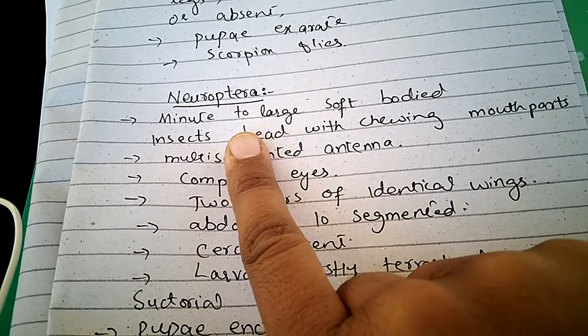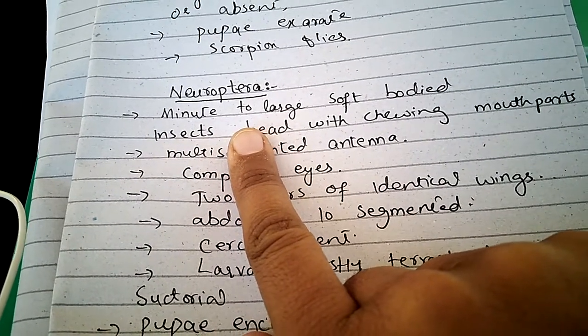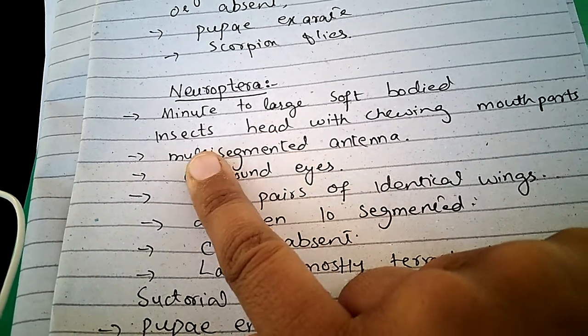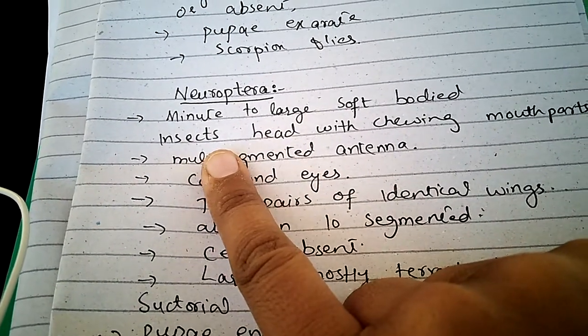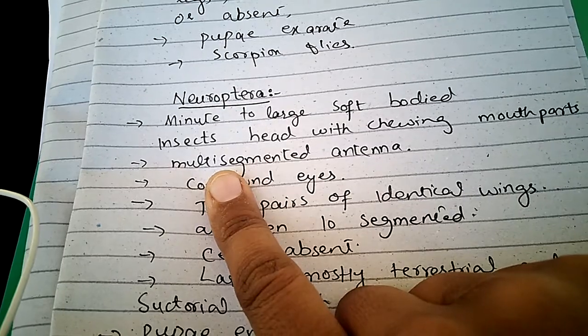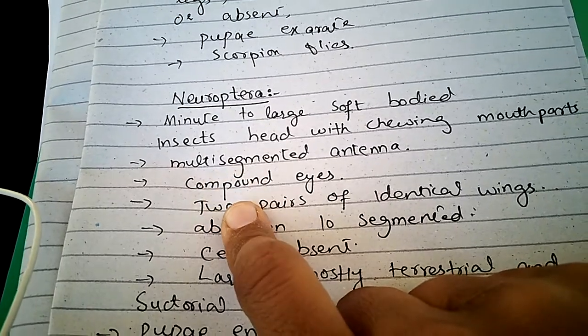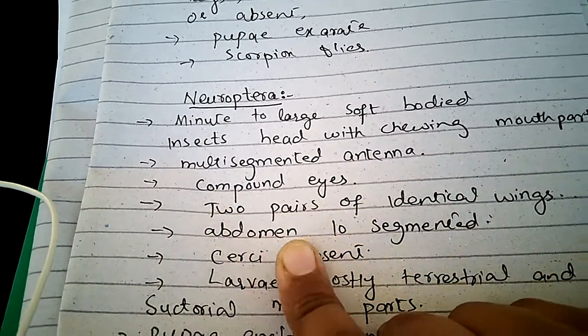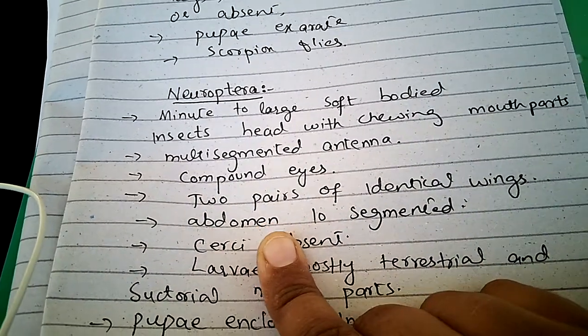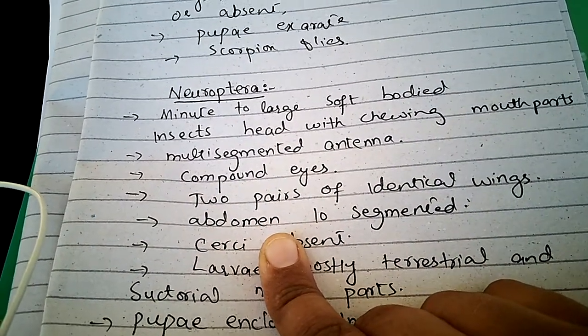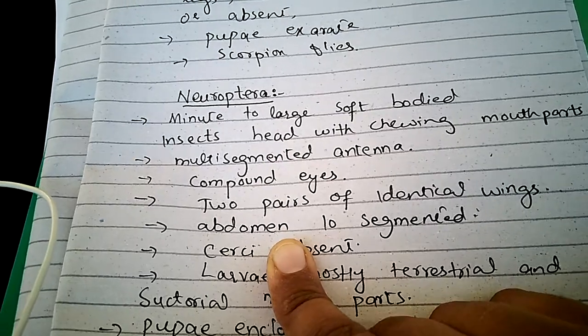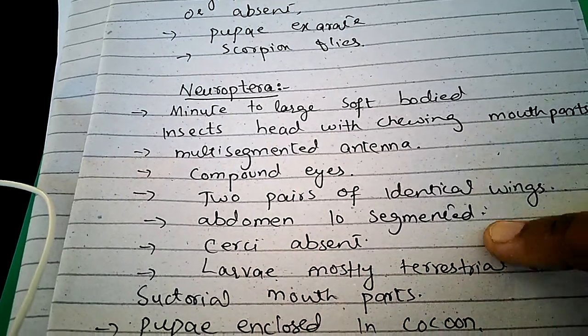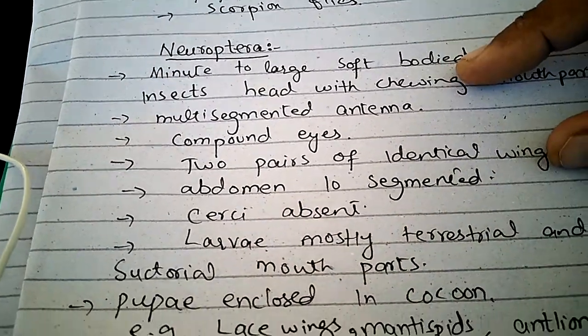These insects are minute to large and soft-bodied insects. They have chewing mouthparts, antennae are multi-segmented, compound eyes are present, two pairs of identical wings are present, abdomen is ten-segmented, and cerci are absent.